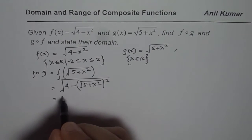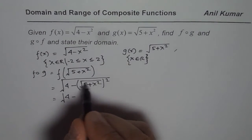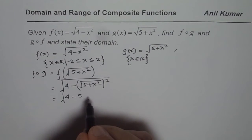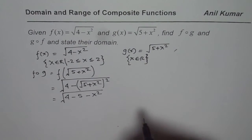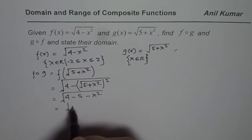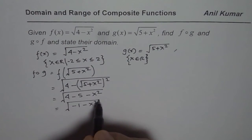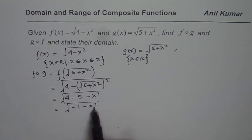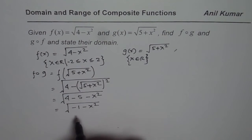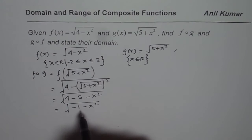Now we can open this bracket and solve. When you open the bracket, the square root and square cancel out, giving us square root of (4 minus 5 minus x squared), which simplifies to square root of (minus 1 minus x squared). Now, as you can see, minus 1 minus x squared is always negative — you start at minus 1 and subtract another positive value. So this function has no valid domain.